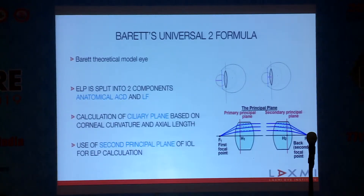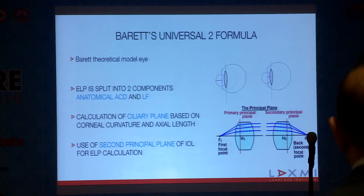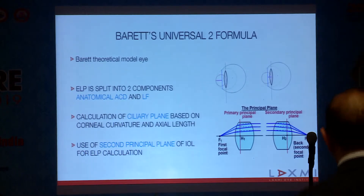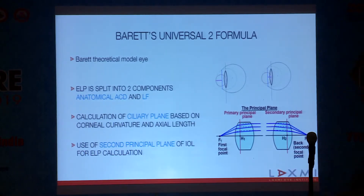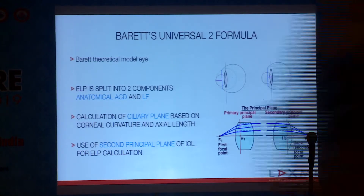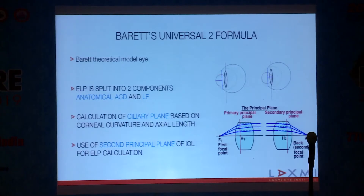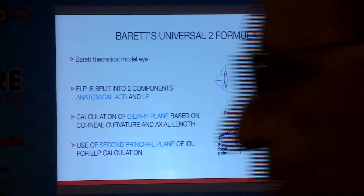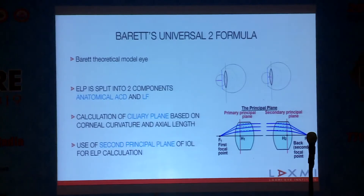Coming to Barrett Universal 2 formula — this is a theoretical formula wherein Barrett's theoretical model consists of an ELP split into two components: anatomical anterior chamber and lens factor. The calculation of the ciliary plane is based on corneal curvature and axial length, and it uses the second principal plane of the IOL for ELP calculation.